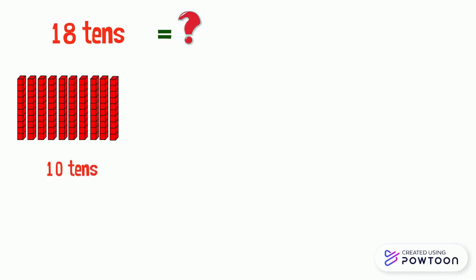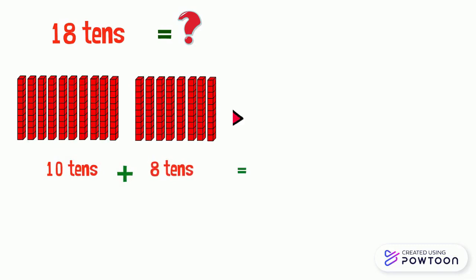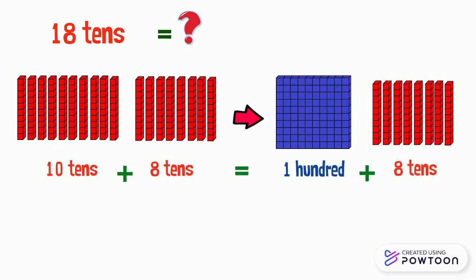Now, what is 18 tens equal to? 18 tens is 10 tens plus 8 tens, which is equal to 100 and 8 tens, which makes 100 plus 80, so it is equal to 180.